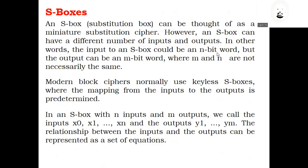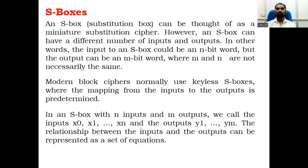Now we will see the next component used within the block cipher — the S-box, or substitution box. An S-box can be thought of as a miniature substitution cipher. An S-box can have different numbers of inputs and outputs — the input could be an n-bit word and the output an m-bit word, where m and n may or may not be equal. Modern block ciphers normally use keyless S-boxes where the mapping is predetermined.